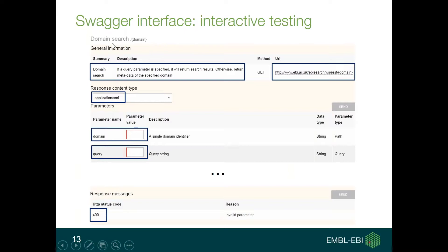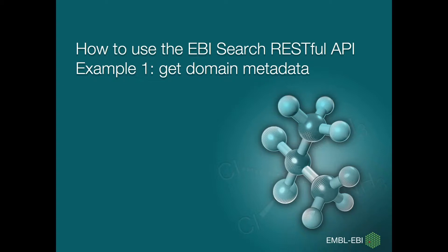This is how the Swagger interface looks for a specific domain search method. There is a short summary, a URL to call, and various boxes that can be filled with relevant information by the user. Once you press the send button, you will trigger the request to the server and can see the results below.